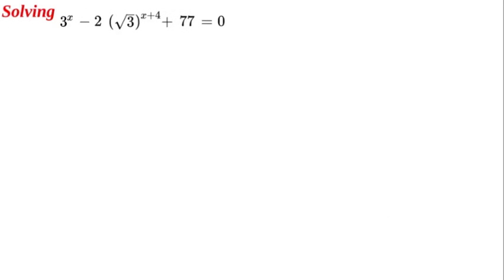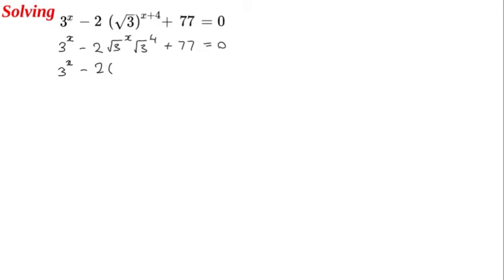If we look across the equation, we can see that this combination allows us to employ the power rule. We're going to simplify by writing 3 to the power of x minus 2, then apply x onto both parts — so the square root of 3 all to the power of x, and the square root of 3 all to the power of 4, plus 77, is equal to 0. The square root of 3 can be written as 3 to the power of 1 over 2, all to the power of x, and also 3 to the power of 1 over 2 all to the power of 4.